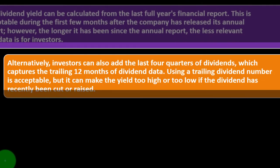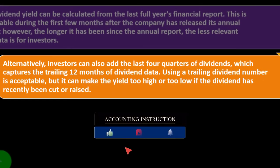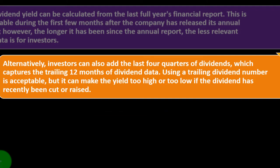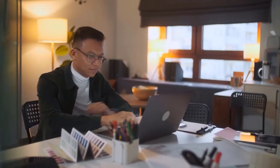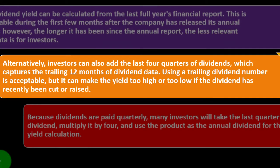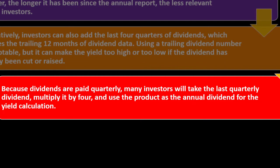Alternatively, investors can add the last four quarters of dividends, capturing the trailing 12 months of dividend data. Using a trailing dividend number is acceptable, but it can make the yield too high or too low if the dividend has recently been cut or raised. Because dividends are paid quarterly, many investors will take the last quarterly dividend, multiply it by four, and use the product as the annual dividend for the yield calculation.